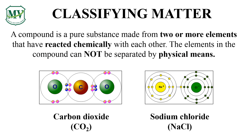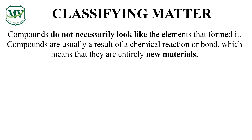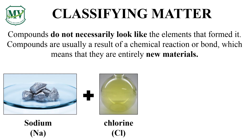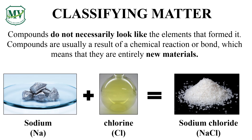Carbon dioxide and sodium chloride are compounds made up of different elements that have chemically reacted, forming a new substance. Compounds do not necessarily look like the elements that formed them. It's actually a result of a chemical reaction or bond, just like sodium and chlorine. When you mix them together, the result is sodium chloride, or salt, which means that it formed entirely new material.